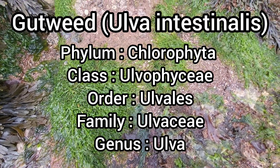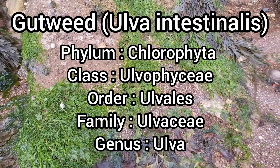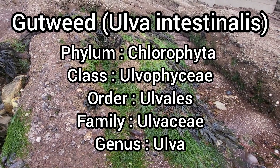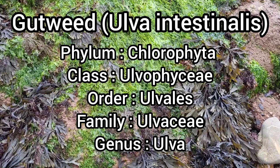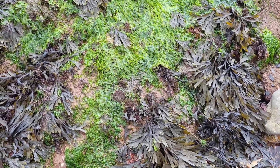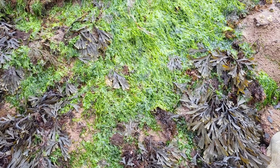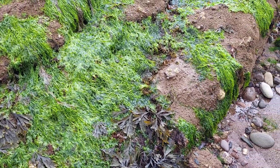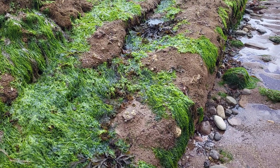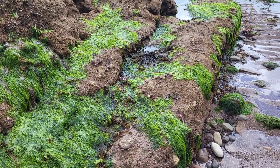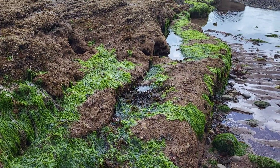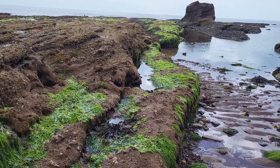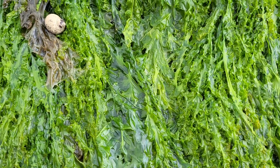Gutweed is a common seaweed found on UK shores and in many different habitats, including rock pools, sand, mud, and even shells and other seaweed species. The fronds can grow up to 40cm in length and 6-18mm in width. Gutweed can be identified by masses of bright green inflated tubes, and the fronds are typically unbranched.